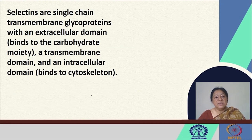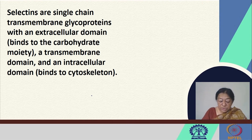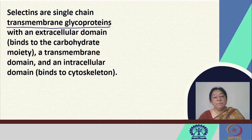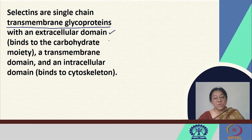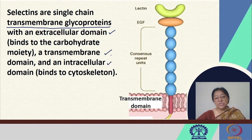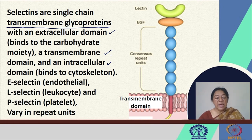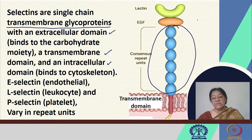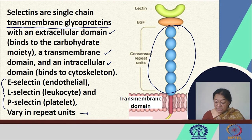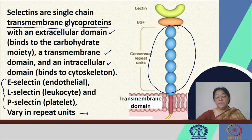Selectins are single-chain transmembrane glycoproteins with an extracellular domain that binds to the carbohydrate moiety, a transmembrane domain, and an intracellular domain that binds to the cytoskeleton. The E-, L-, and P-selectins each have a variation in their number of units — it could be 3, 5, 7, or 9 units depending upon their specific function.